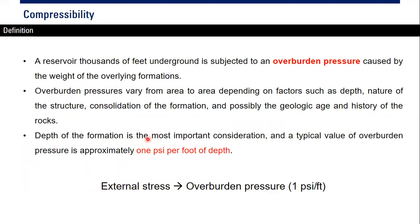Depth of formation is the most important consideration, and the typical value of overburden pressure is approximately one psi per foot of depth. This is the rule of thumb — one psi per foot. So if your formation is located at 5000 feet, the overburden pressure is one psi per foot multiplied by 5000 feet, which equals 5000 psi.